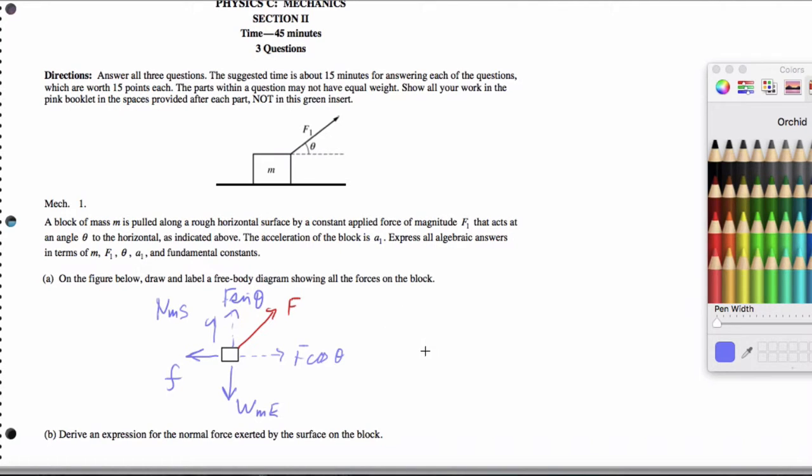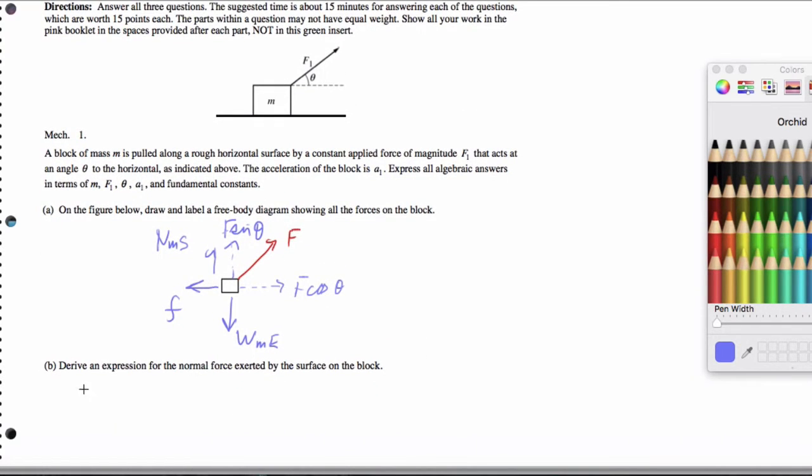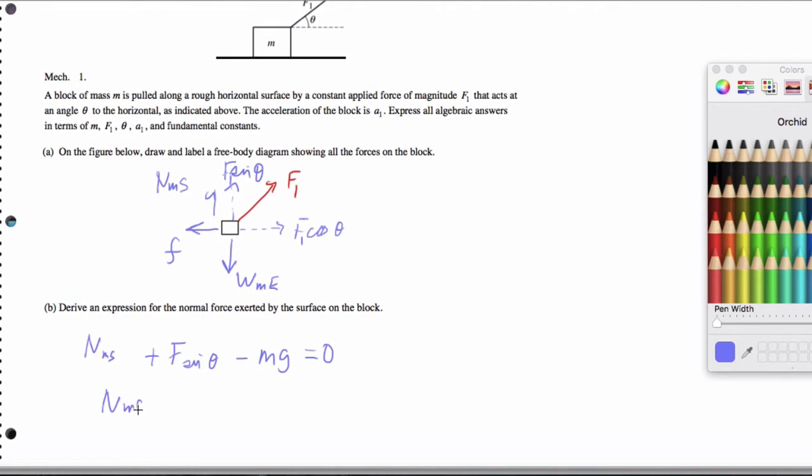So let's go ahead and now that we've got this labeled, let's go ahead and actually derive an expression for the normal force. So we're going to have the normal and the sine component of the pulling force. It's actually F1. So let me be careful and label that. Competes with the weight force, which I'm just going to write as mg pointing down. So our normal force simply ends up being mg minus F1 times the sine of theta. So we've expressed everything in terms of the constants below.